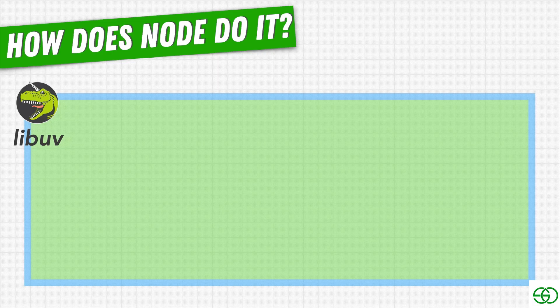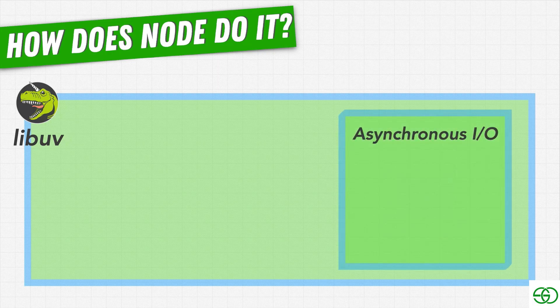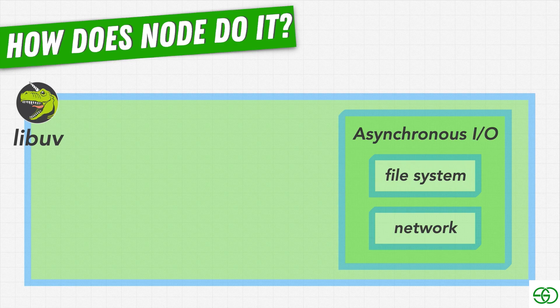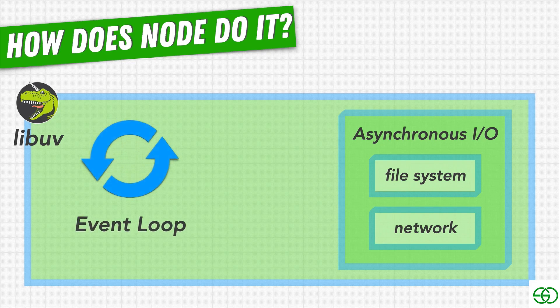We've seen that libuv handles our input/output functionality. Specifically, libuv handles the two main types of I/O: file system operations like the functions in our fs module, as well as network operations. We're able to execute all of these functions asynchronously thanks to the event loop. This event loop is code in libuv that runs our asynchronous functions and executes the corresponding callback when the result is ready.